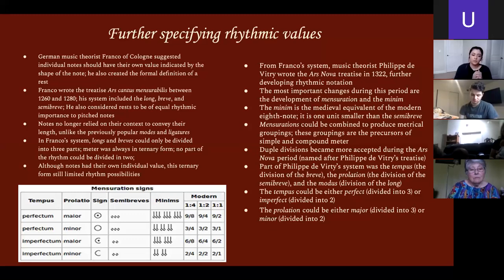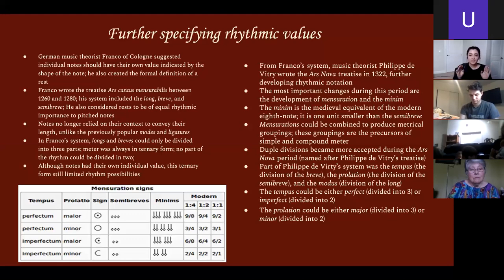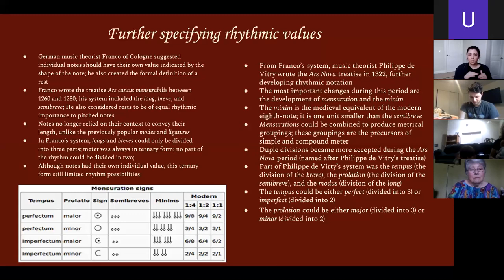In Franco's system, longs and breves could only be divided into three parts — meter was always in ternary form, meaning always divided into three. No part of the rhythm was ever divided into two. The reason was a Catholic theological significance: three is considered the perfect number, connected to the Holy Trinity. Two would be imperfect and unacceptable. It was something of a superstition of the church — if something wasn't divided into three, it was no good. Although the notes had their own individual values, the ternary form still limited the possibilities, as you could only divide rhythm in that specific way.